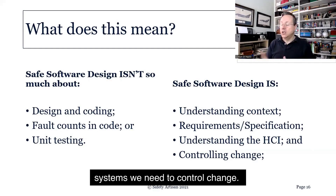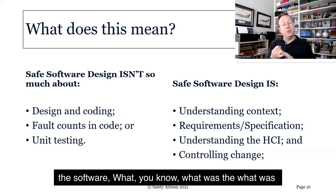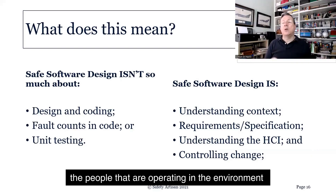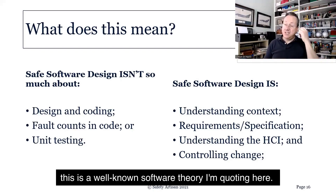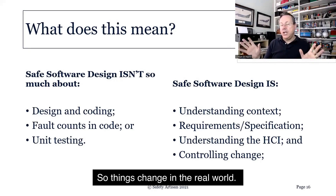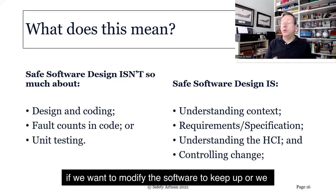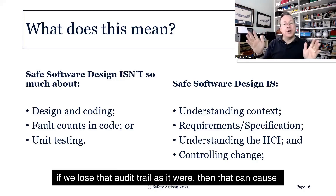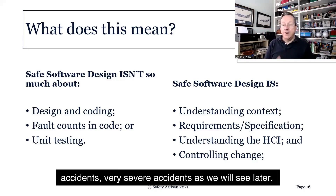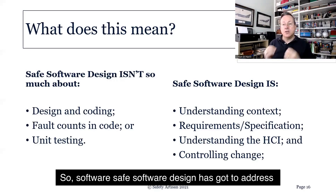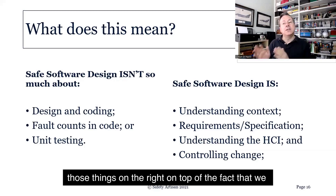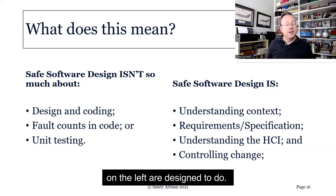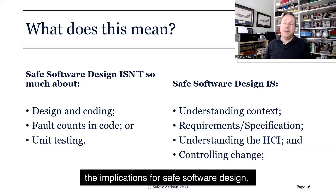Through the life of the software, which may be very long in some systems, we need to control change. We need to understand what the original intent of the software was — the original context, requirements, and specification — because these things change over time. The scenario, the people operating it, the environment all change. If we want to modify the software to keep up, or choose not to, we need to understand the original intent versus what we're doing with it now. If we lose that audit trail, that can cause very severe accidents, as we will see later. Safe software design must address those things, on top of needing a successful product that actually works.